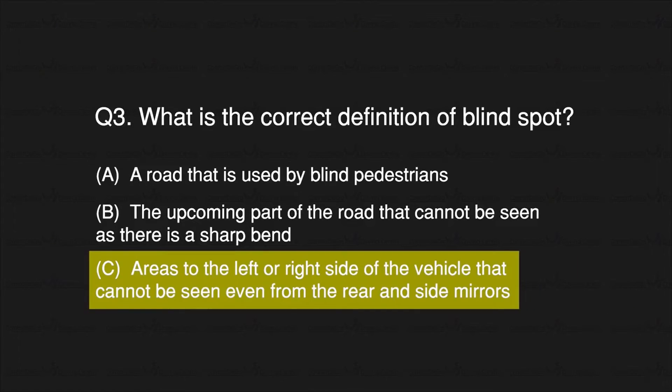Answer: C. Areas to the left or right side of the vehicle that cannot be seen even from the rear and side mirrors.